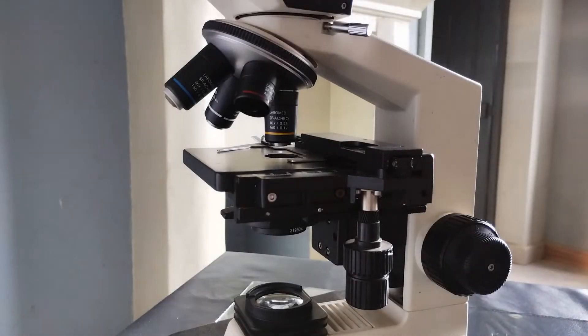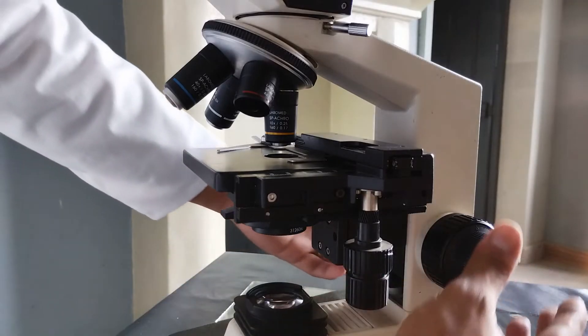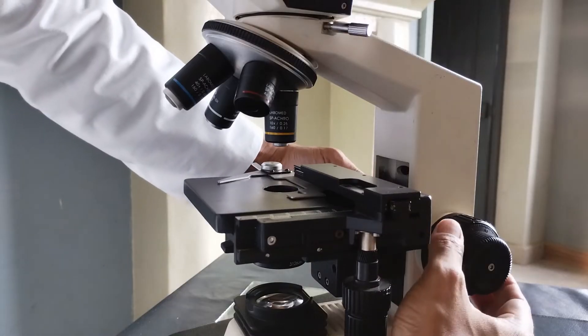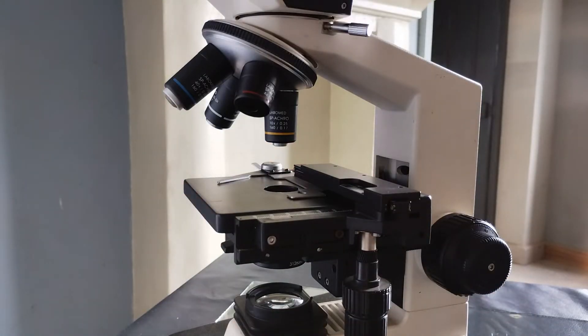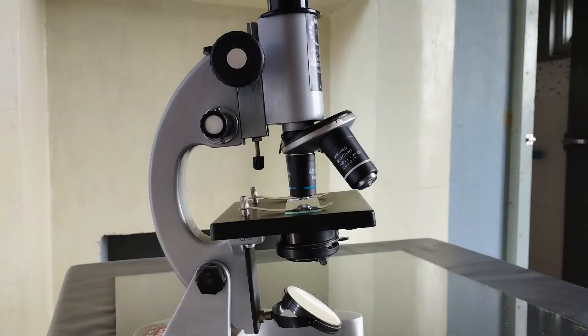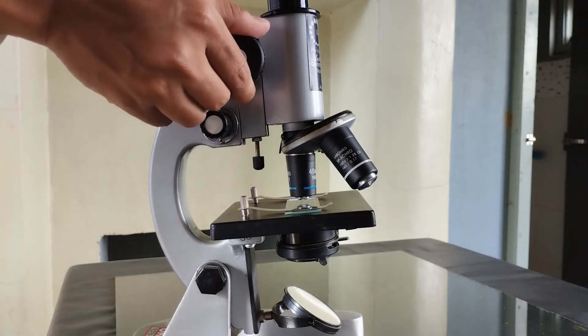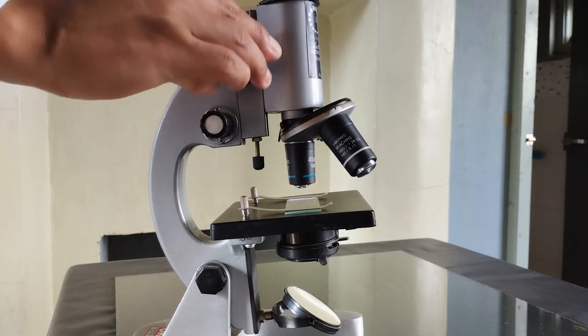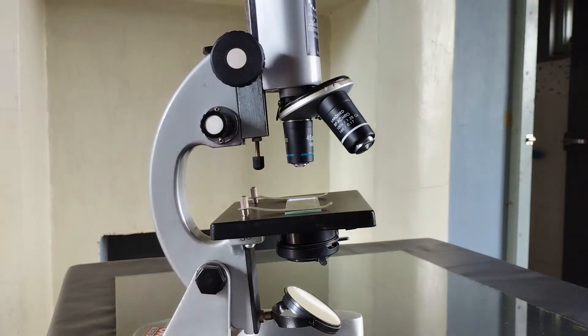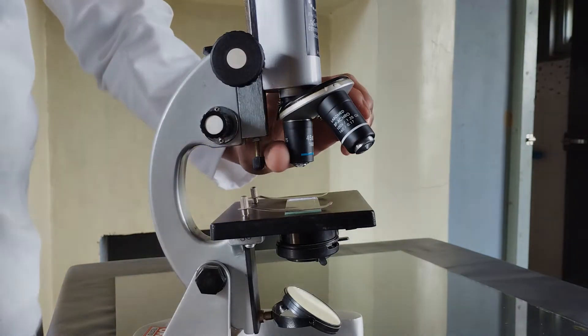The binocular microscope is now more or less ready to be used. For specimen viewing, first lower the stage and away from the objective lens by turning the coarse adjustment knob. It's worth noting here that in the traditional monocular microscope, turning the coarse adjustment screw raises the body tube and the objective lenses up and away from the stage. In a binocular microscope, the body tube and the objective lenses are stationary. Turning the coarse adjustment screw only lowers the stage away from the objective lenses. The end result is basically the same.